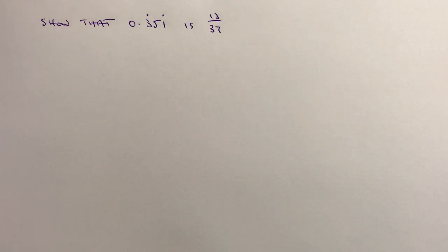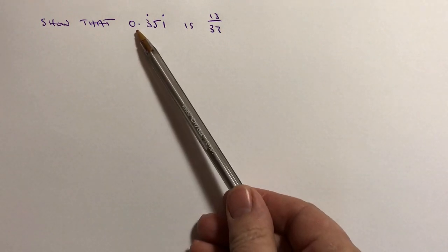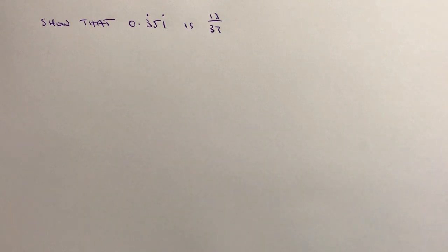If you're not sure about any of this, please do have a look at some of the other videos. What we're being asked is to show that 0.351 recurring is the same as 13 over 37 as a fraction.